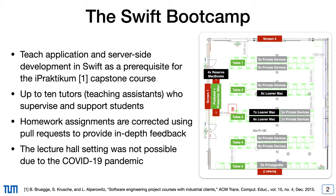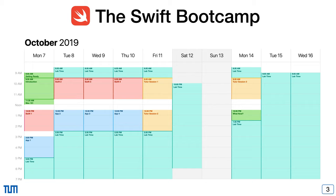Unfortunately, the lecture hall setting and in-person interaction were not possible last semester due to the COVID-19 pandemic. This challenged us to transition the course from a lecture hall setting to a distributed online setting. Students attended a series of alternating Swift and App sessions to solve in-class exercises forming the basis of their homework. There are a total of 12 sessions, each two hours long. During sessions and lab times, instructors and tutors are available to support students and answer questions, with tutors being the first point of contact outside lab times and lectures.